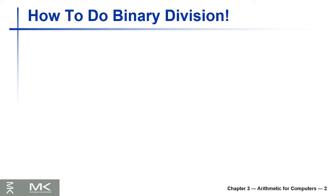Any division operation, like seven divided by two, gives us a quotient and a remainder. Basically, how many twos are in seven? There are three twos, because three times two is six, so there are three twos and a remainder of one. You can write it as three and a half — three and a half twos in seven. So three is the quotient and one is the remainder.